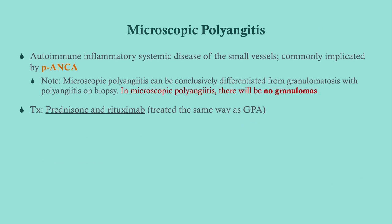The most accurate test for microscopic polyangiitis is a biopsy. Treatment is the same as Wegener's — prednisone and rituximab — which makes sense given the very similar presentation and organ involvement.